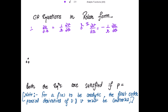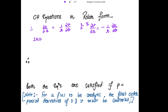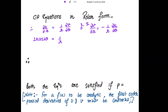Substituting the partial derivatives into the first Cauchy-Riemann equation: ∂u/∂r = (1/r)·∂v/∂θ gives 2r·cos(2θ) = (1/r)·p·r²cos(pθ). The 1/r cancels with one power of r, yielding 2r·cos(2θ) = p·r·cos(pθ).